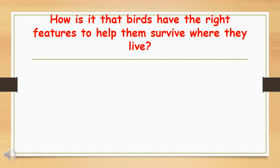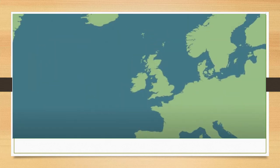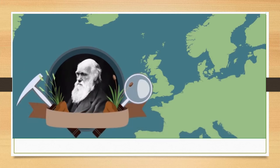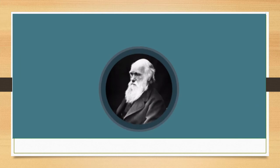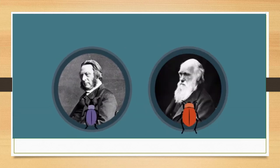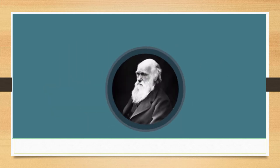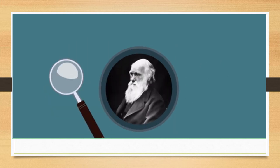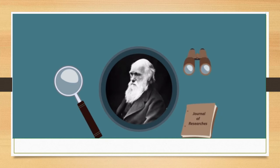How is it that birds have the right features to help them survive where they live? We're going to watch a video on the next slide now and you'll find out a bit more about one of the theories. Charles Darwin was born in England in 1809. He was a keen naturalist and geologist who made detailed observations about the natural world. Darwin first became interested in nature while studying theology at Cambridge where he developed a passion for beetle collecting which was encouraged by his cousin William Fox. During this time Darwin learned many important scientific skills including species identification, how to catalog specimens and field work.